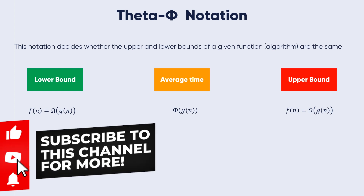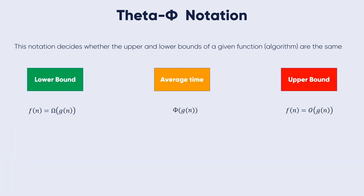The rates of growth in the best case and the worst case are the same, like f(n) = 10n + n, so the average case will also be the same. For a given algorithm or function, if the rates of growth or bounds for O and Omega are not the same, then the Theta notation rate of growth will not be the same. In that case, we need to consider all possible time complexities and take the average — that average time is the Theta notation.